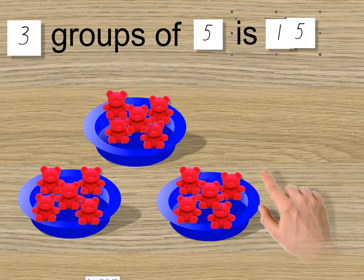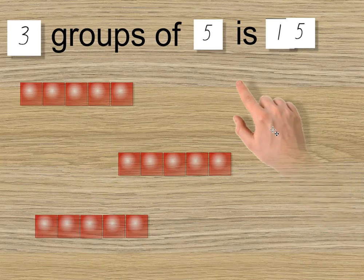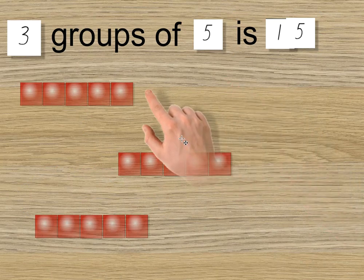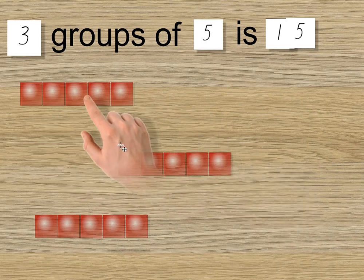Are there other ways of looking at three groups of five, or five groups of three? Sure. Let's have a look. Now we have the same three groups of five, but they're not in bowls this time. You can see they are in rows.